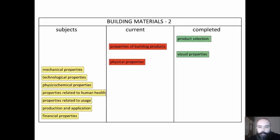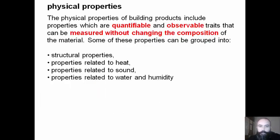We can continue with the physical properties of building products. The physical properties of products include properties which are quantifiable and observable traits that can be measured without changing the composition of the material.